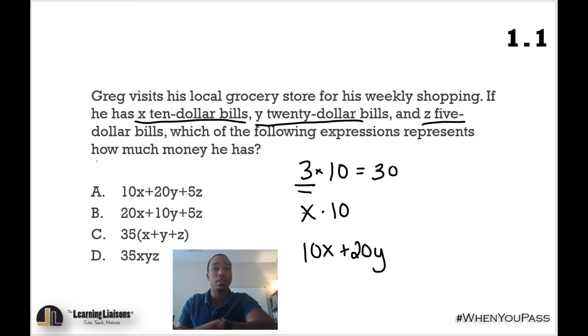And again with the $5 bills, we have Z amount of them. Not 5, 12, or 17 of them, but we have Z. We just need to make sure we understand the importance of variables because they just represent numbers—we just don't know what the numbers are. So we'll add five multiplied by Z because if we have Z amount of five-dollar bills, we'll have that value there as well. So 10X + 20Y + 5Z will give us the amount of money that Greg has in order to go shopping.